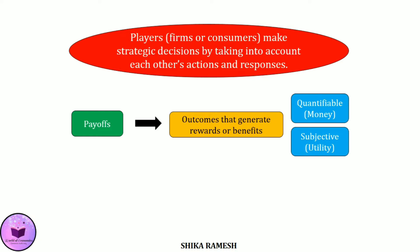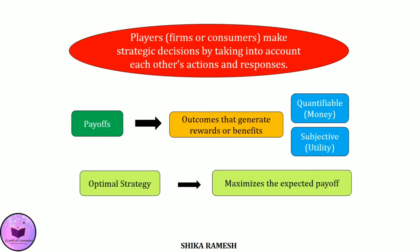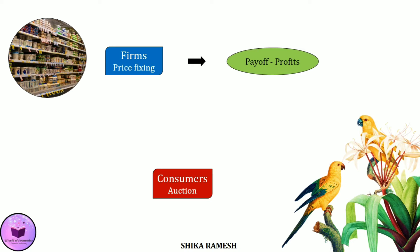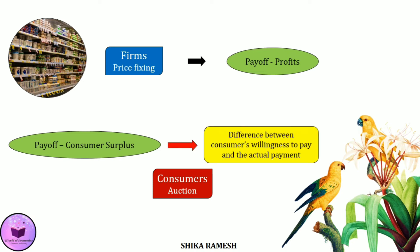The optimal strategy for a player will be the one that maximizes the expected payoff, meaning a player will opt for the strategy which maximizes their expected benefits or rewards. In the case of firms competing for setting prices, the payoffs will be profits. Whereas in the case of bidders at the auction, the winner's payoff will be the consumer surplus — the difference between the consumer's willingness to pay and what they actually pay — which can be positive, negative, or even zero.